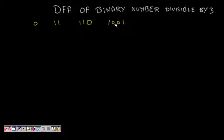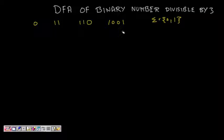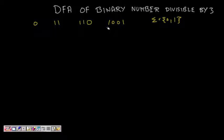These binary numbers will be given as strings. So sigma is of course {0,1} and you have to design an automaton which will accept strings which are divisible by 3. This looks like a perplexing problem because how will I know — you are given this number and I will be proceeding like this.